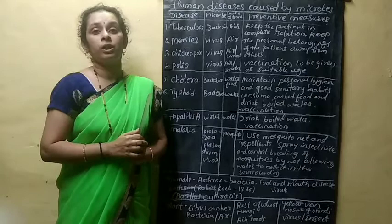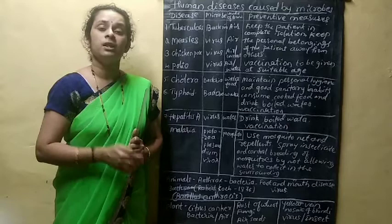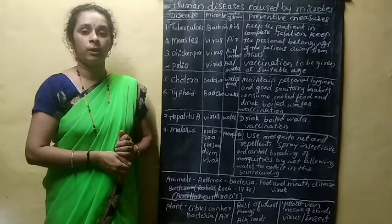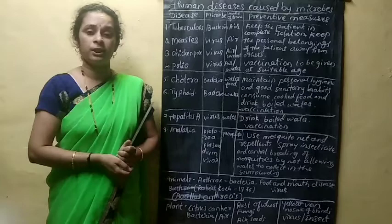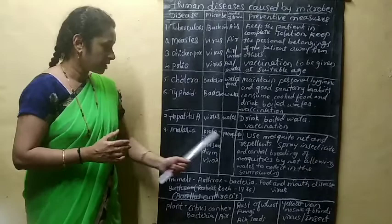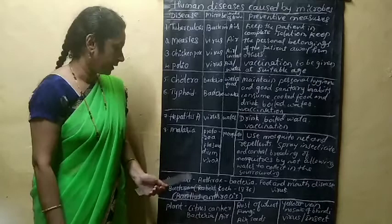The preventive measures for malaria are: use a mosquito net or curtain and repellents, spray insecticide, and control the breeding of mosquitoes by not allowing water to collect in the surroundings. Stagnant water should be avoided because mosquitoes breed in collected water.